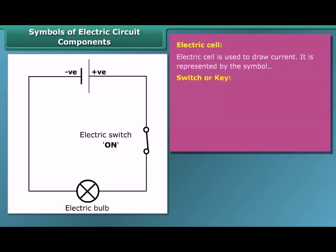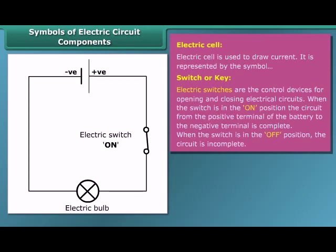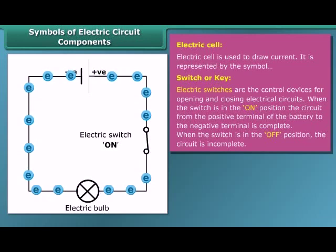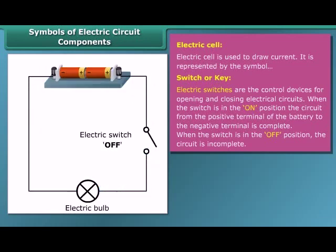A switch or key makes or breaks the connection in a circuit. When the switch is in the on position, the circuit is closed and the current flows throughout the circuit. When the switch is in the off position, the circuit is open and no current flows through the circuit.